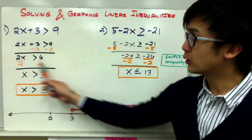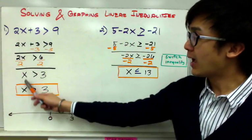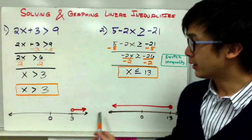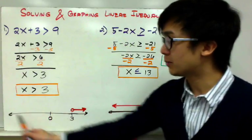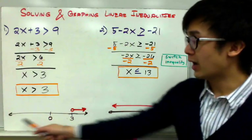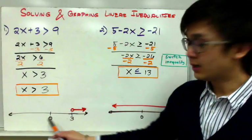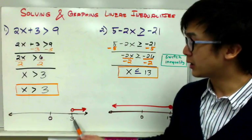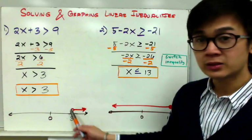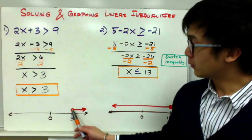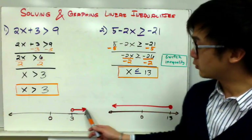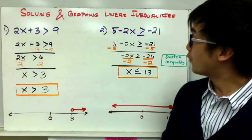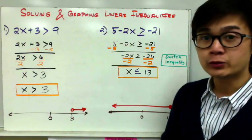To graph the solution x greater than 3, you have your number line with 0 in the middle, positive 3 marked, and an open circle shaded towards the right.